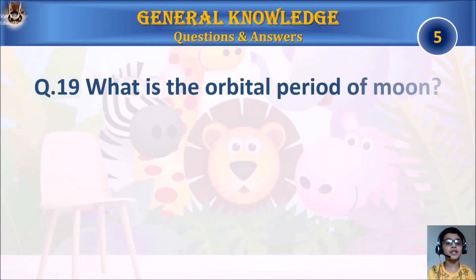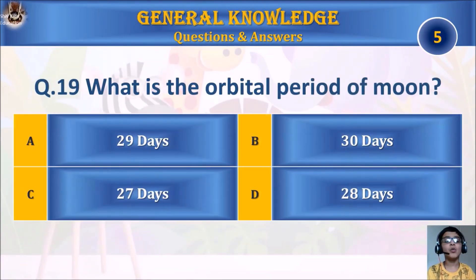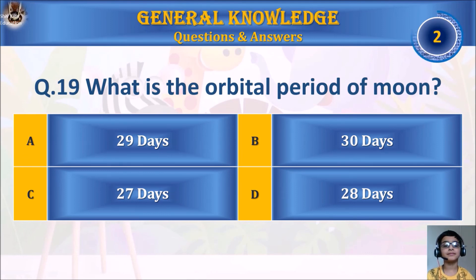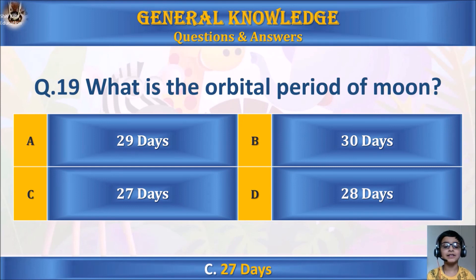Question 19: What is the orbital period of the Moon? A. 29 days, B. 30 days, C. 27 days, or D. 28 days. Your time starts. The answer is C. 27 days.